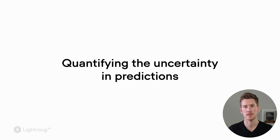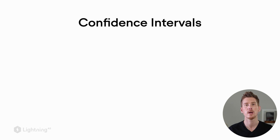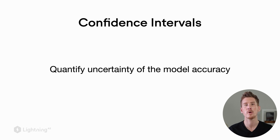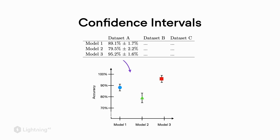Another topic related to trustworthy and reliable machine learning is quantifying the uncertainty of our predictions. One method is to construct confidence intervals when we compute things like the model accuracy. Confidence intervals are about quantifying the uncertainty of our estimate — for example, the accuracy.